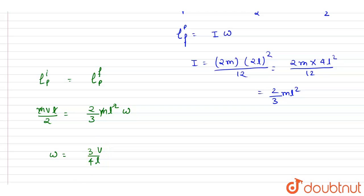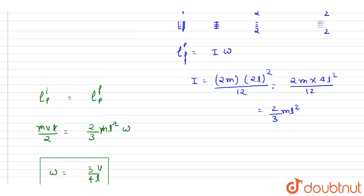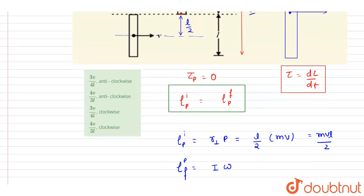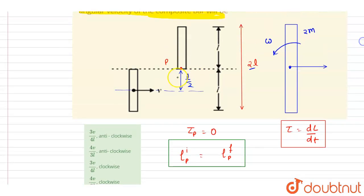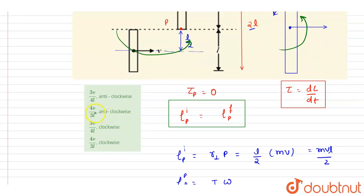And this will be the answer of this question. Now you can check the option: 3v by 4l. As we can see, initially the angular momentum was in this sense, so now also it will be in this sense. It will be in anti-clockwise direction, so option A will be the correct option.